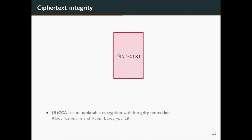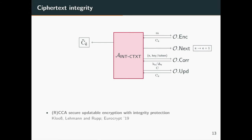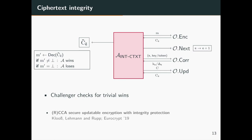Ciphertext integrity for updatable encryption schemes has been studied in the work of Clues et al. In the CTXT game, an adversary attempts to provide a valid new ciphertext to the challenger, who evaluates whether it is new and decrypts to a valid message; if so, the adversary wins. For symmetric encryption, there is a well-known composition result: the combination of CPA security and ciphertext integrity gives CCA security. We will show this result also applies to updatable encryption.